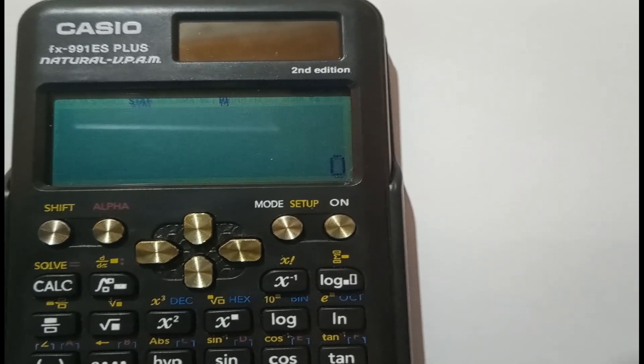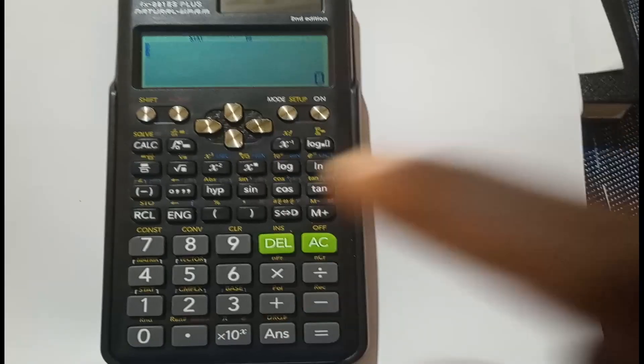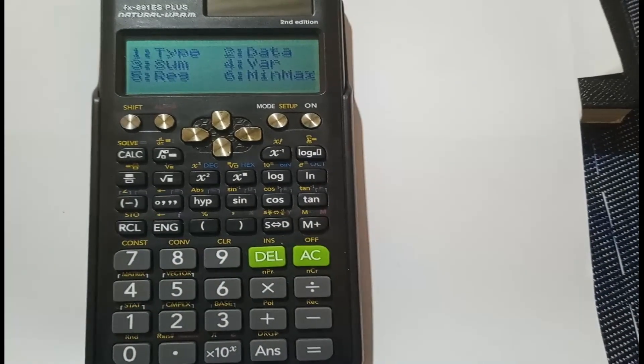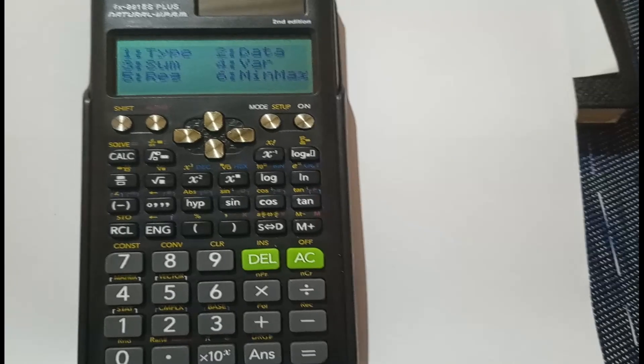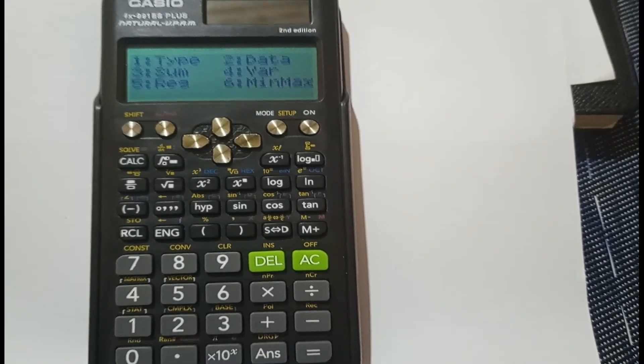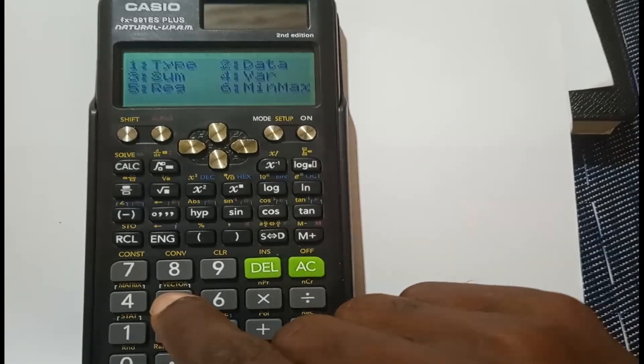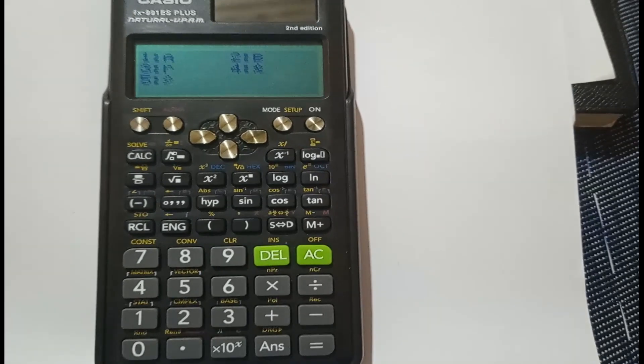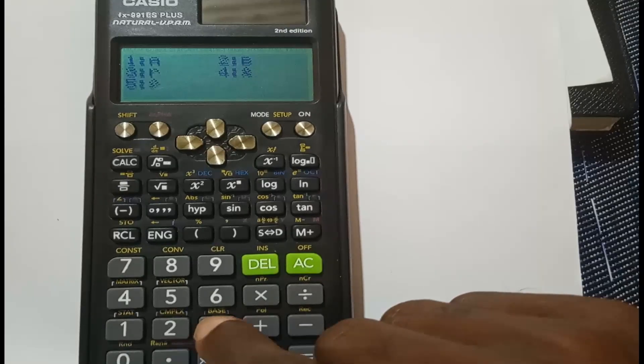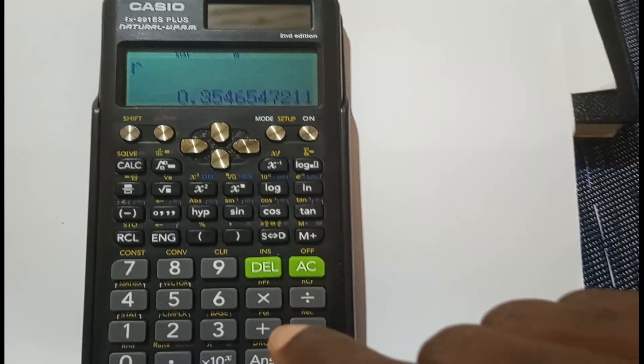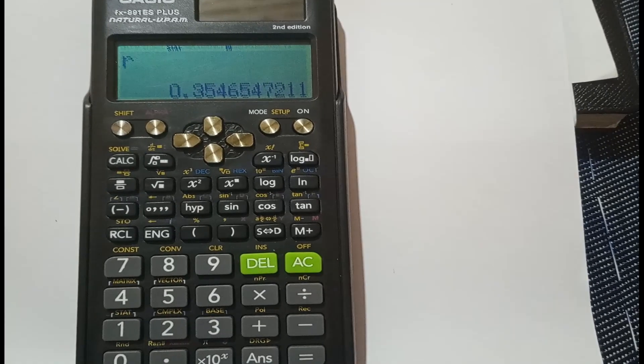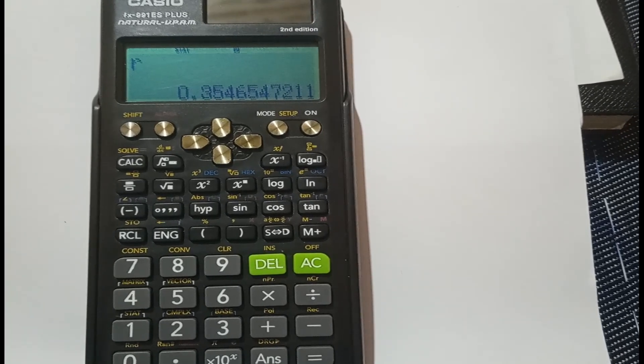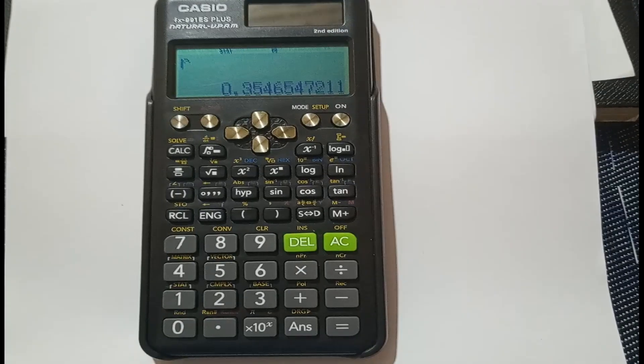After pressing AC, I press SHIFT and look for statistics, that's number 1. I'm looking for correlation coefficient under regression, so press number 5 for REG. I'm looking for the correlation coefficient represented with r, so press 3 which is r, then equals. The correlation coefficient is 0.354654721, or to 2 decimal places, 0.35.